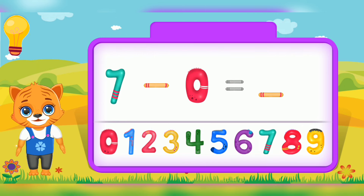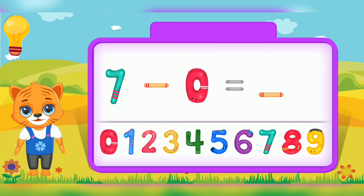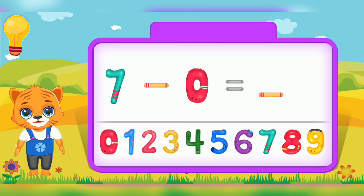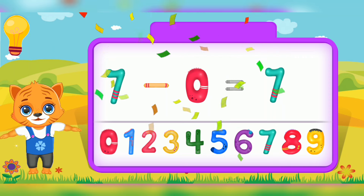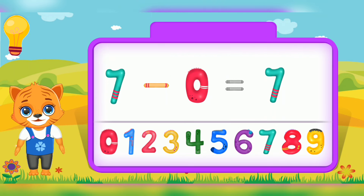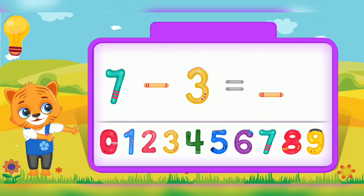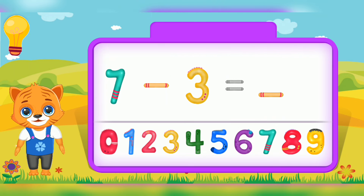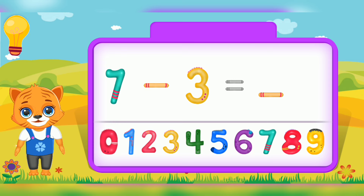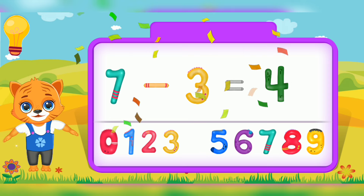7 minus 0 is equal to. Excellent! 7 minus 3 is equal to. Nice!